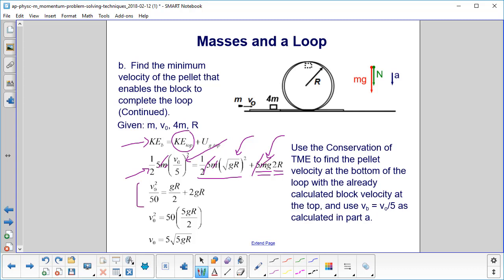And we have this here. Do a little more algebraic manipulation because we have gr over 2 plus 2gr. Well, that's just 5 halves gr. And then we come up with, this is our original velocity of the pellet right here. That would be 5 times the square root of 5gr.